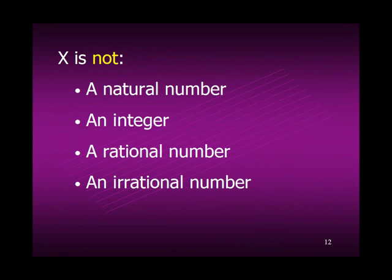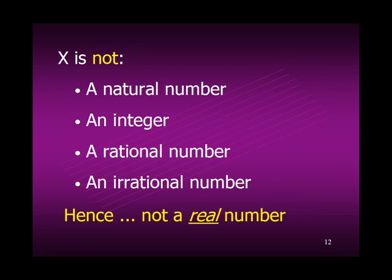So when we say that x squared equals minus 1 has no real number solution, we're saying that x can't be a natural number, an integer, a rational number, or an irrational number. It must therefore be something else. The question is what, and should we call this solution a number?